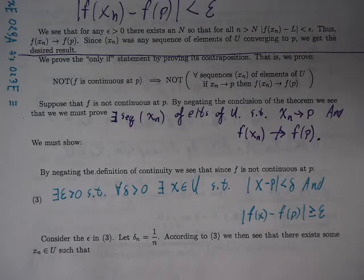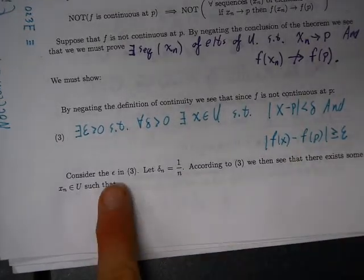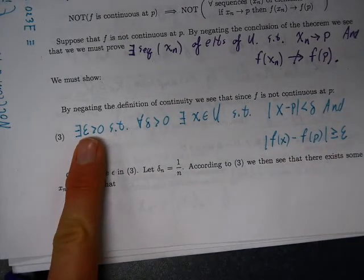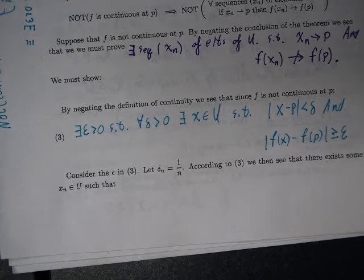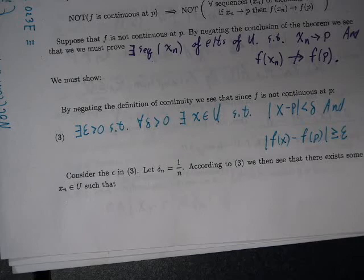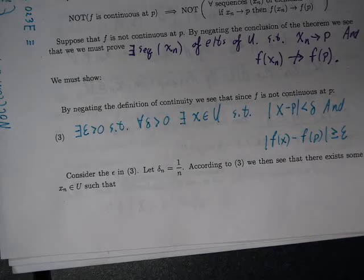Here's the game: consider the epsilon we get out of the failure of continuity. We know something is true for absolutely every delta greater than zero, and we want to build a sequence. For each choice of delta, we get a choice of x, so let's take a sequence of deltas. Let delta_n = 1/n — my favorite sequence that converges to zero. Each of those will give us a choice of x, giving us a sequence.